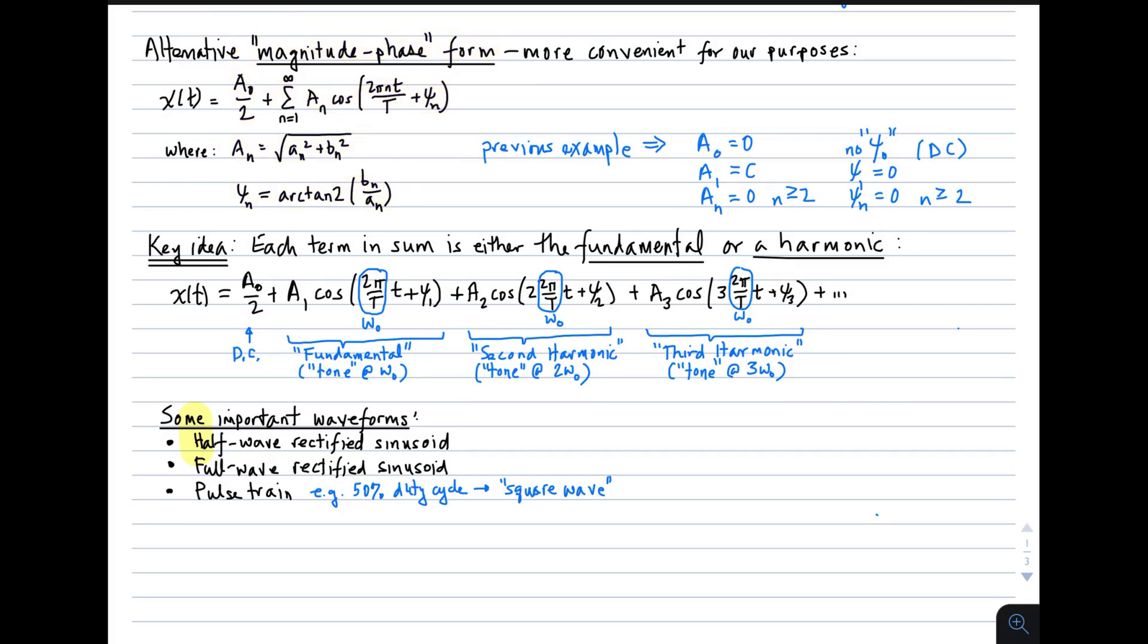So in our previous example, where we just had cosine of ω₀t, big A₀ is 0, big A₁ is c, and big A_n is 0 for all n greater than or equal to 2. As far as the phase terms, there is no ψ₀. It doesn't appear in the formulation. ψ₁ is 0, which is simply saying that first term is cosine, not sine, or something in between. And all phases for terms greater than or equal to 2 are 0.